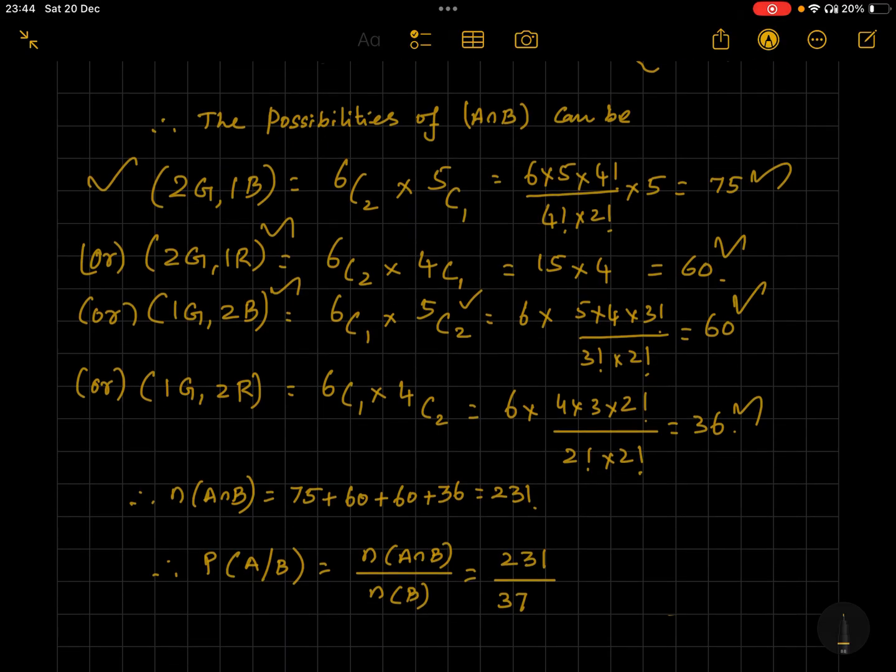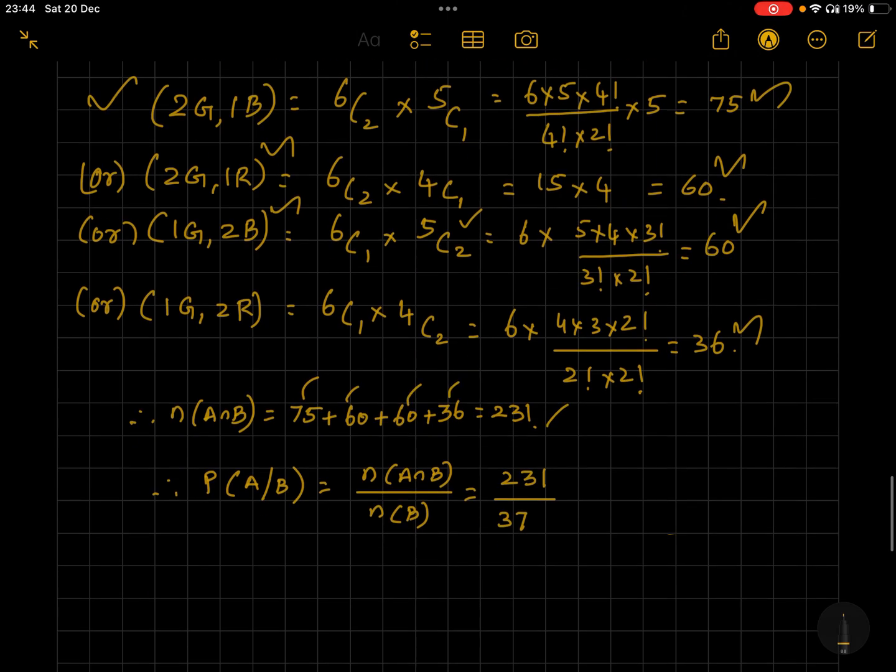Therefore we can choose either of the options, so we are using the addition sign. So n(A∩B) is equal to 75 + 60 + 60 + 36, which is equal to 231. Therefore P(A/B), that is the conditional probability of A given B has occurred, is n(A∩B) by n(B), which is 231 divided by 371. Thanks for watching students, have a nice day.